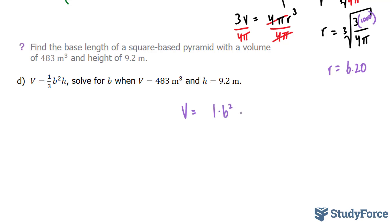1 times B squared times H. Anything times 1 is itself, so I'm going to erase this 1. There's no need for that. Over 3. And I'm also going to erase this dot, which represents multiply. Next, I will try to solve for B.